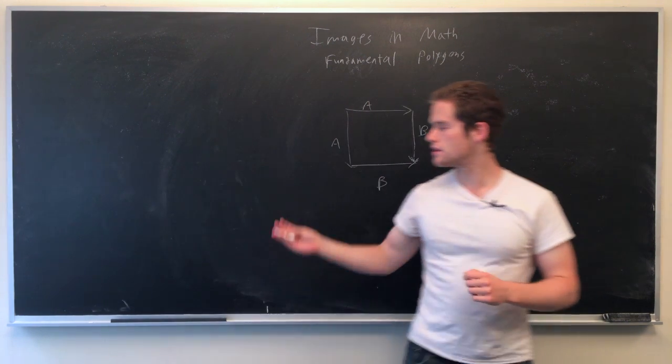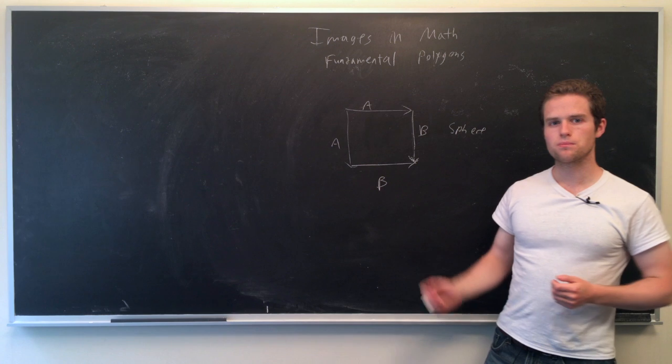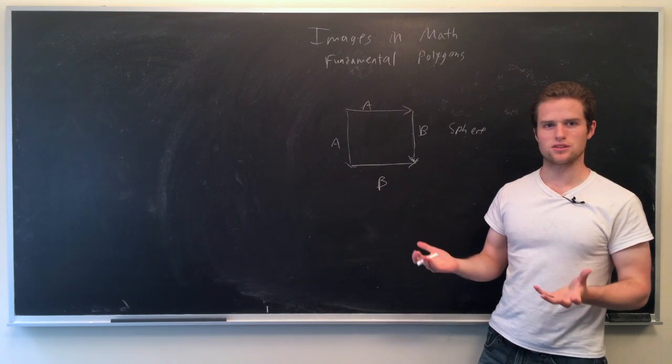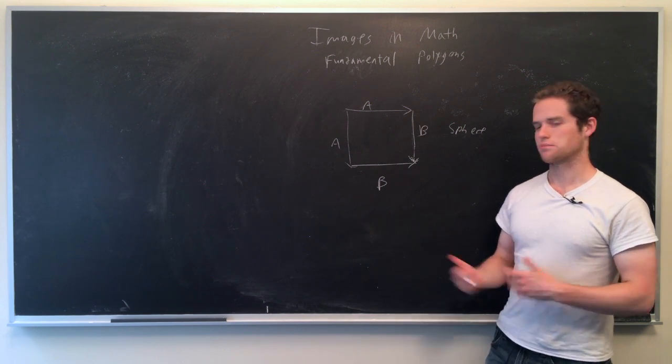Right here we can see a sphere, and a sphere is a pretty well-known figure. If you have a ball, the surface on a ball, that gives us a sphere, and this can be orientated.